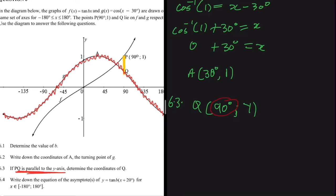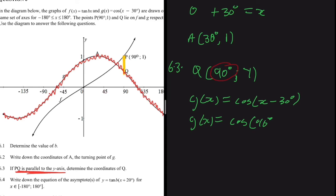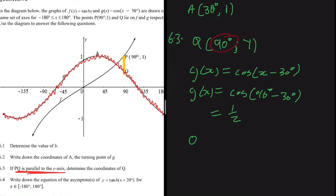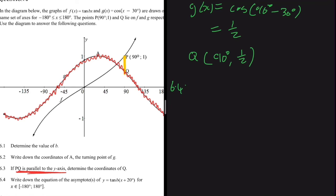Since Q lies on g(x), we substitute x = 90° into g(x) = cos(x - 30°): g(90°) = cos(90° - 30°) = cos(60°) = 1/2. Therefore, the coordinates of Q are (90°, 1/2).